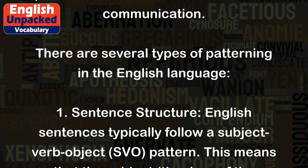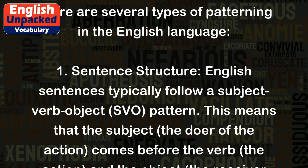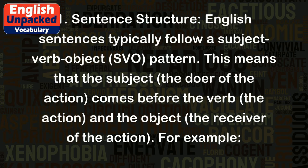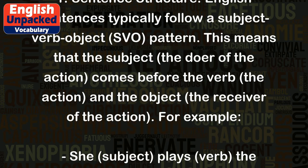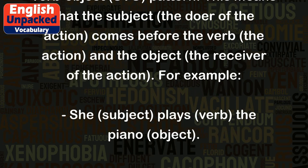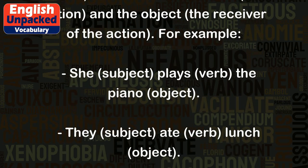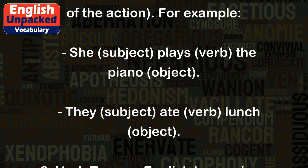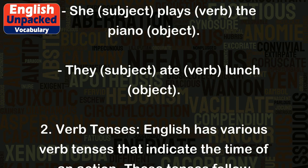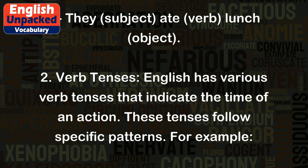1. Sentence Structure. English sentences typically follow a subject-verb-object pattern. This means that the subject, the doer of the action, comes before the verb, the action, and the object, the receiver of the action. For example: she (subject) plays (verb) the piano (object). They (subject) ate (verb) lunch (object).